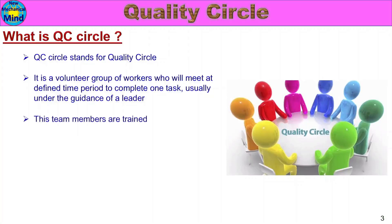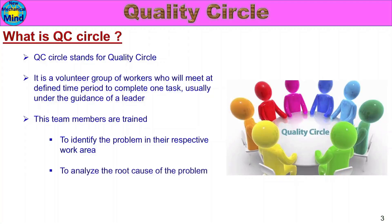In the Quality Circle, all team members are trained. Quality Circle activities start with training — to identify the problem in the respective work area, any problem, any improvement. To analyze the root cause of the problem. How do you find the root cause? For example, using 5W1H Analysis or 5Y Analysis.